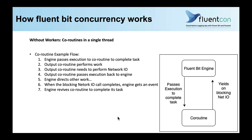Prior to workers, this is how concurrency worked in Fluentbit. Fluentbit uses a model called co-routines — short for cooperative routines. Technically, Fluentbit has multiple p-threads in use. But before workers, only a single thread is active at a time, and threads cooperatively pass execution between each other. You can think of this like the Fluentbit core engine.